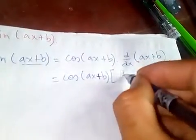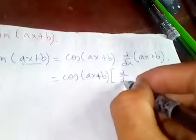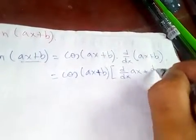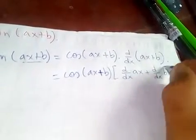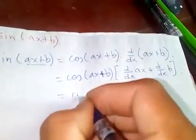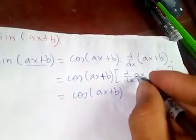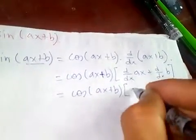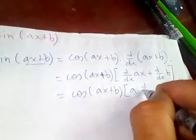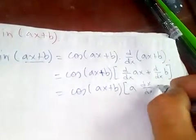This derivative will come here: ax plus derivative of b, which is cos ax plus b. Since a is constant, it will come out in the differentiation of x with respect to x plus...